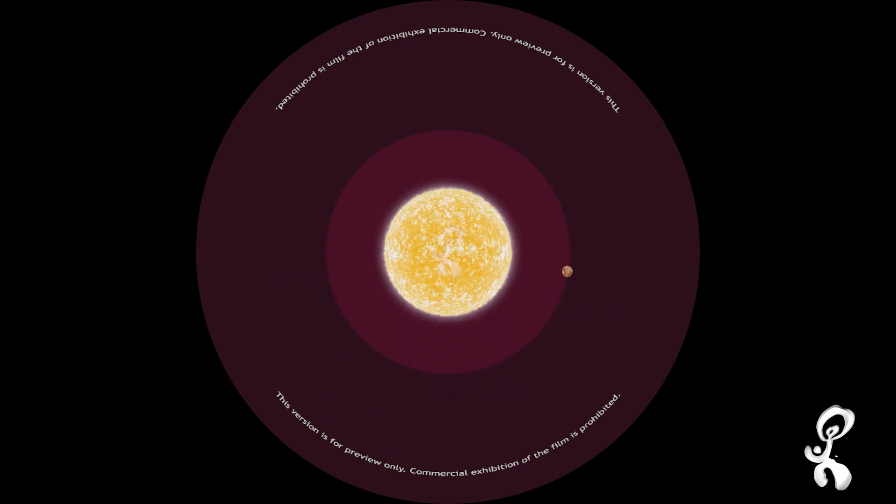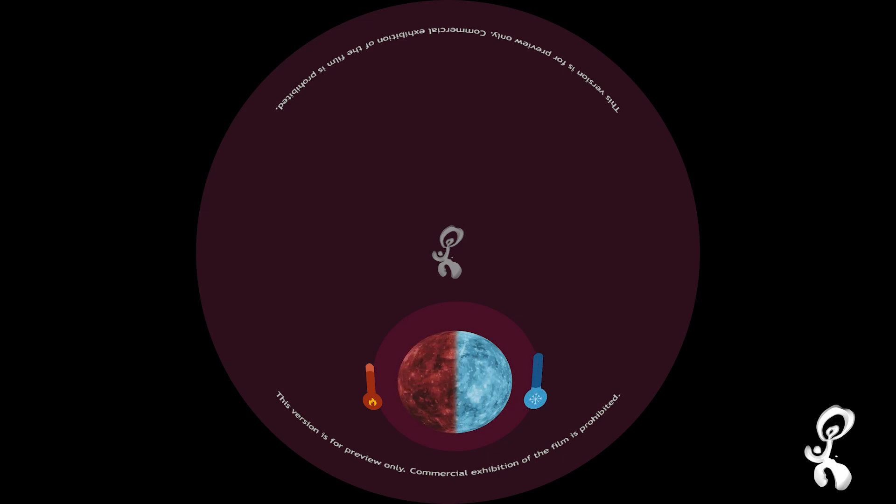Mercury is closest to the sun. One year on Mercury is shorter than its one day. That makes the planet super hot in the daytime and super, super cold in the nighttime.